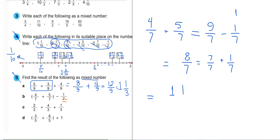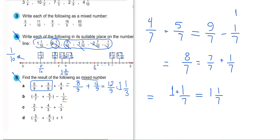So we have 1 plus 1 over 7. The answer as a mixed number is 1 and 1 over 7.